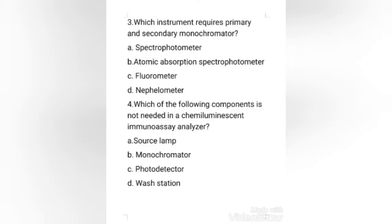Fourth question: which of the following components is not needed in a chemiluminescent immunoassay analyzer? Options: source lamp, monochromator, photodetector, or wash station. The right answer is option A, source lamp.